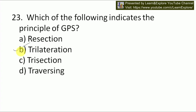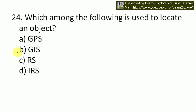Trilateration is the principle involved in GPS. This can be used to track or locate any movable object's location. It involves mathematical operations which are regularly used in case of surveying. The principle of GPS is trilateration. Next question: which among the following is used to locate an object? Options are GPS, GIS, RS, and IRS. Our answer is A — GPS. The full form of GPS is Global Positioning System.